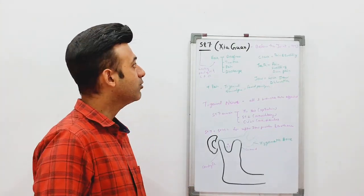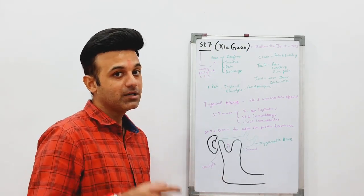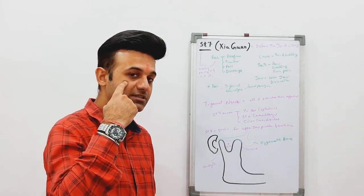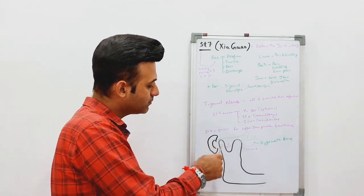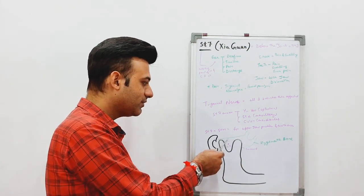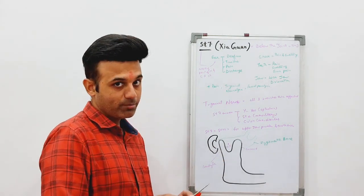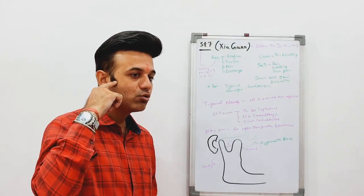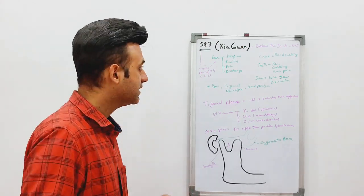Stomach 7 is known as Yaguan in Chinese, meaning Below the Joint — referring to the temporomandibular joint, TMJ. The zygoma has a zygomatic process which joins with the condylar process of the mandible. The mandible has two processes: the coronoid and the condyle. This forms the temporomandibular joint. To locate Stomach 7, come in front of the external pinna, open and close the mouth, and you will feel a depression below the zygomatic process — that is Stomach 7.